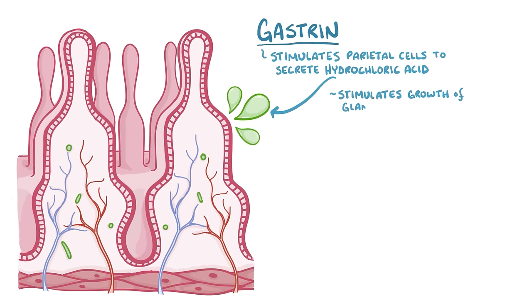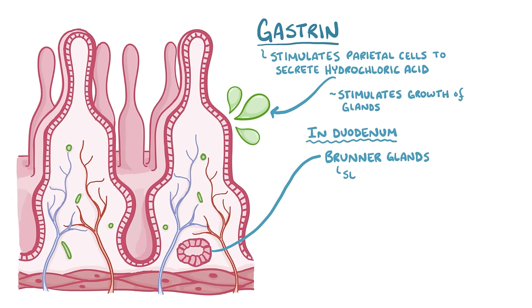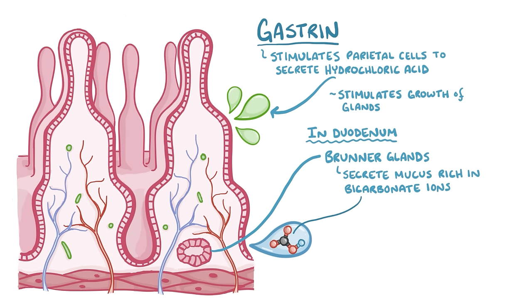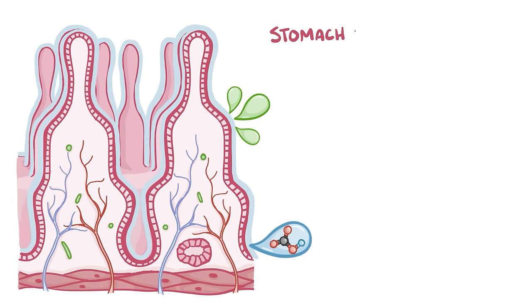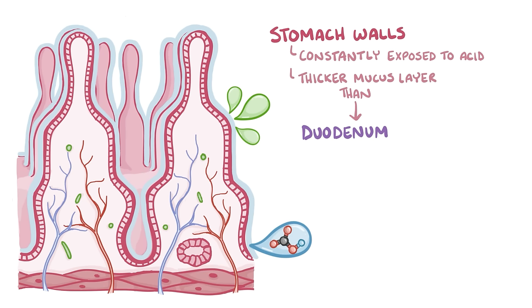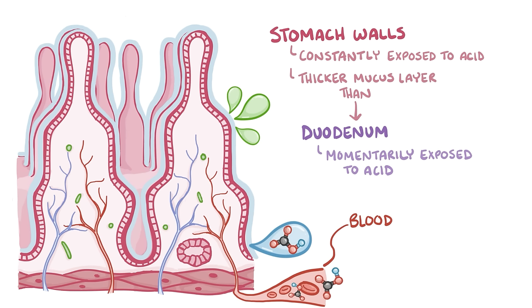The duodenum has Brunner glands, which secrete mucus rich in bicarbonate ions into the lumen. With all the digestive enzymes and hydrochloric acid floating around, the stomach and duodenal mucosa would get digested if not for the mucus coating the walls and bicarbonate ions secreted by the duodenum, which neutralizes the acid. Since the stomach walls are constantly exposed to the acid, they have a thicker mucus layer compared to the duodenum. The blood flowing to the stomach and duodenum brings even more bicarbonate, which again helps neutralize the hydrochloric acid.